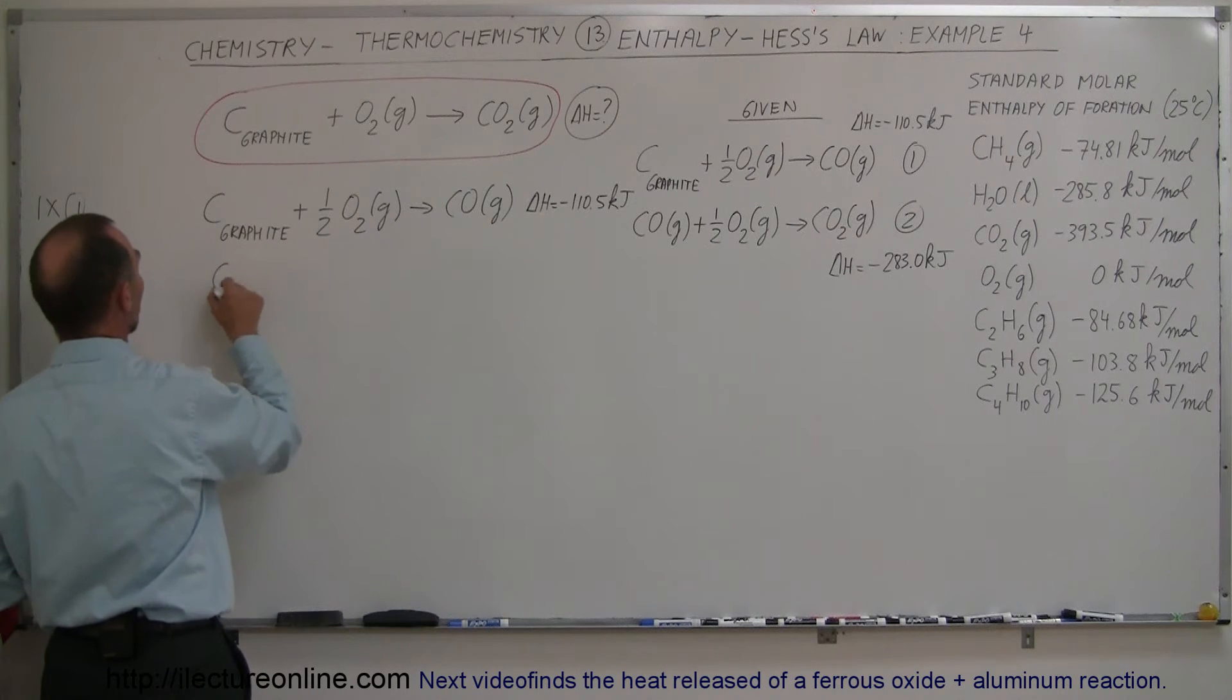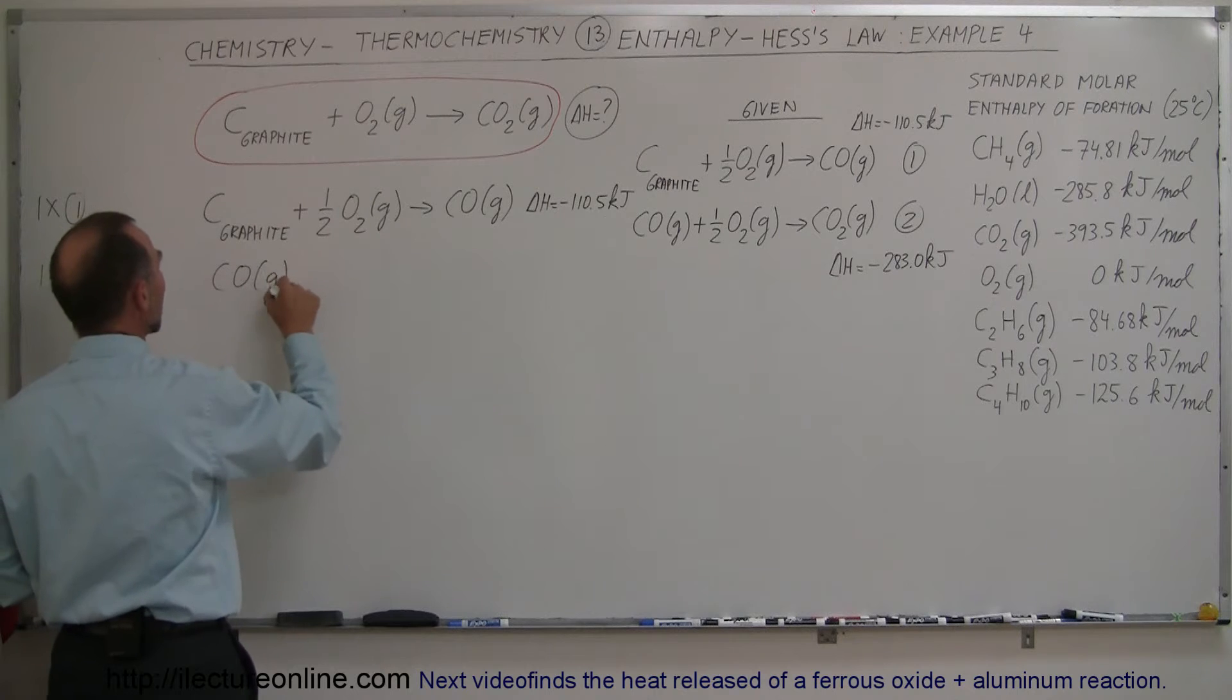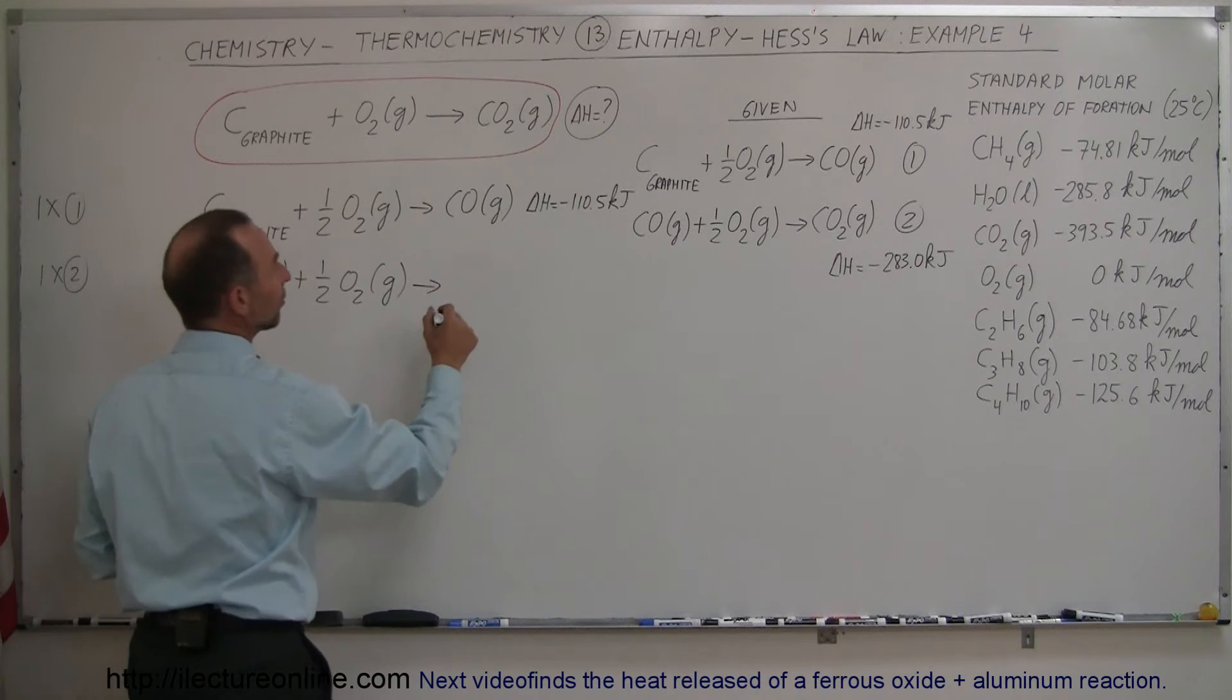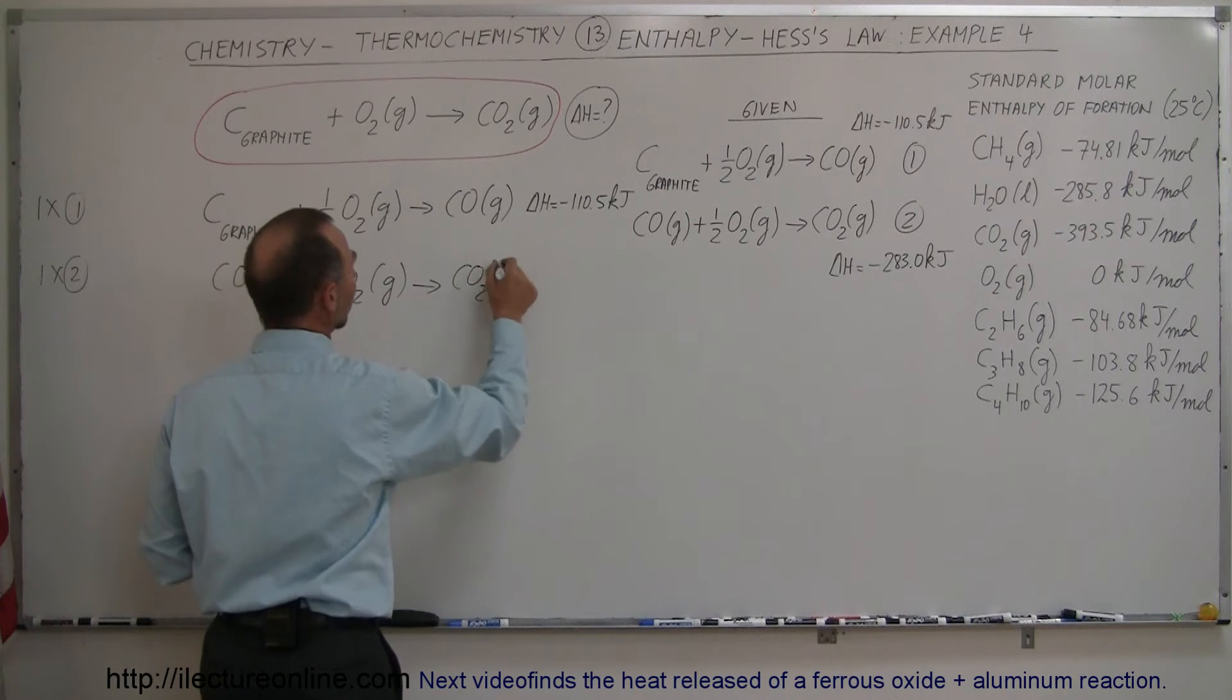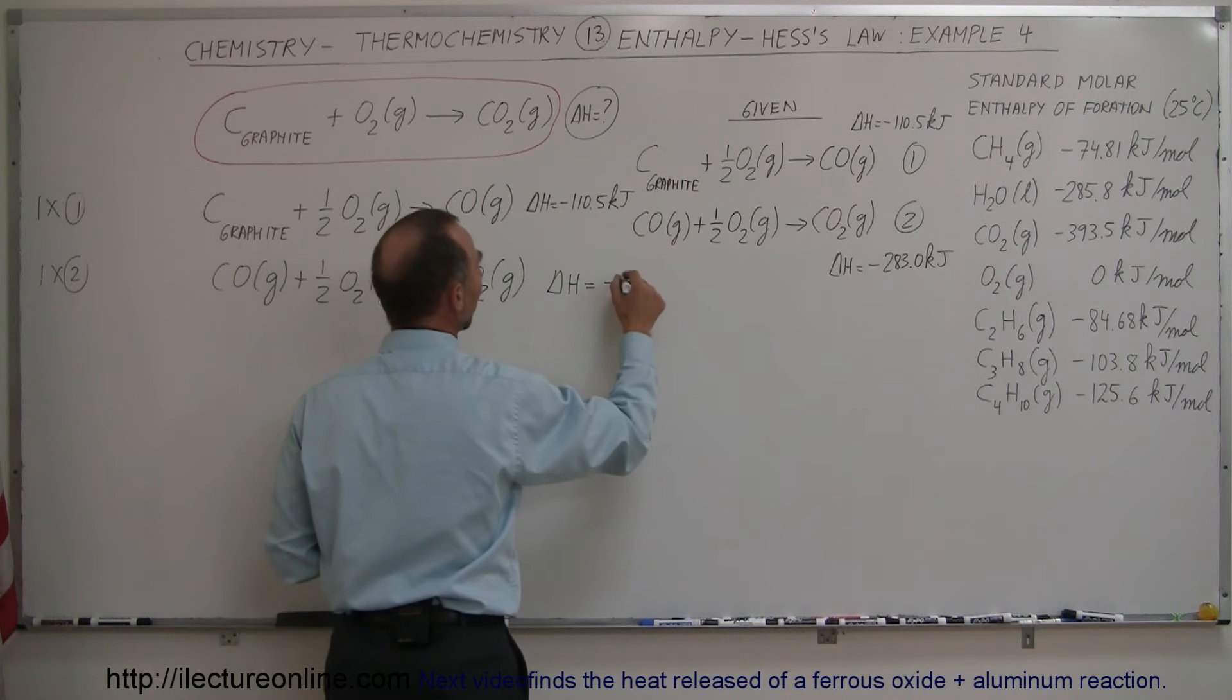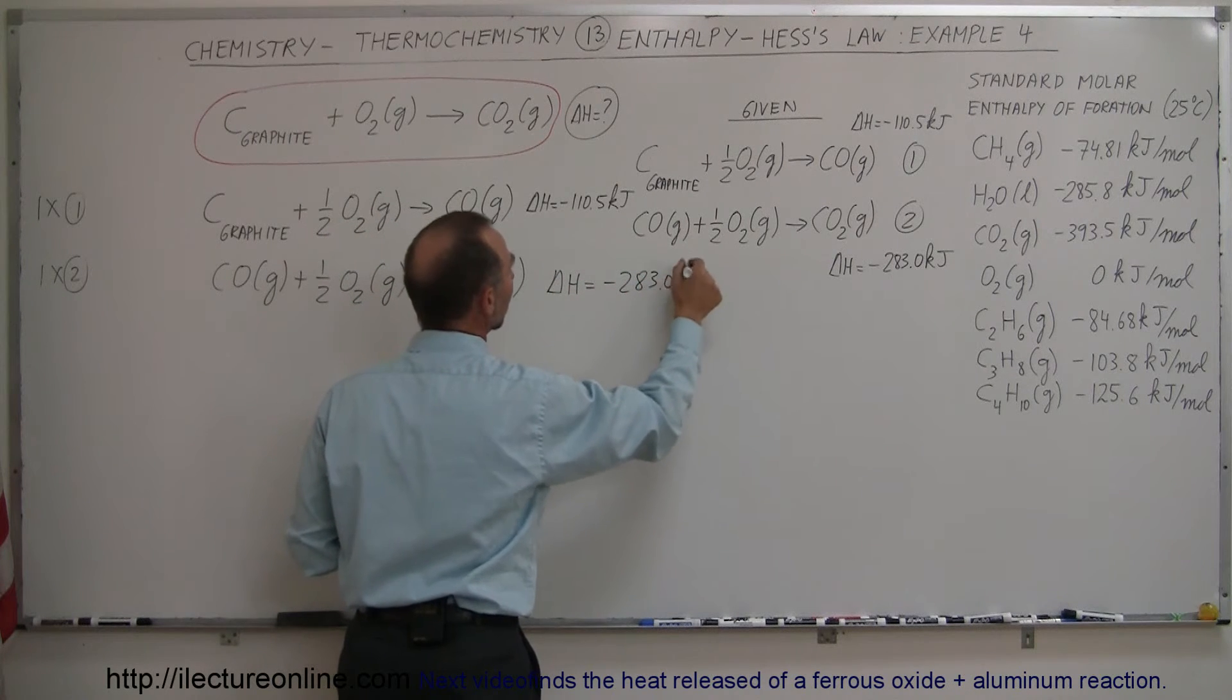This becomes carbon monoxide gas plus half a mole of oxygen gas gives us carbon dioxide gas, one mole of that, with an enthalpy change equal to minus 283.0 kilojoules.